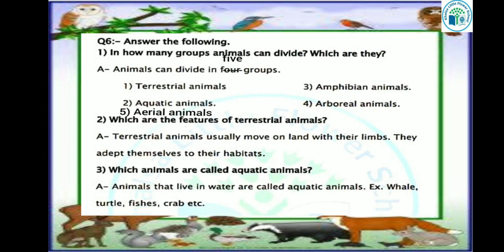Let's see our first question: in how many groups can animals be divided? Which are they? Animals can be divided into 5 groups: terrestrial animals, amphibians animals, aquatic animals, arboreal animals, and aerial animals.